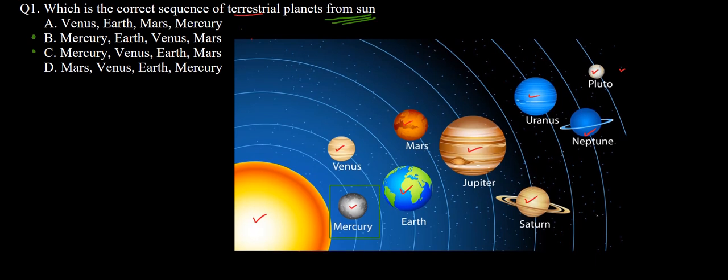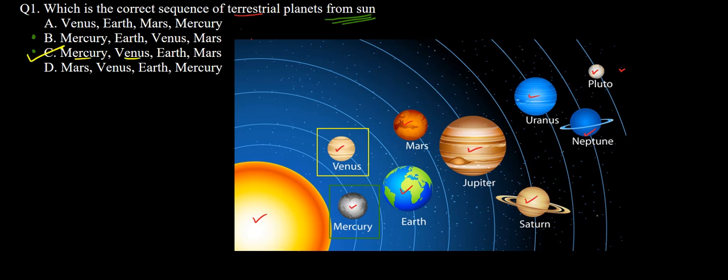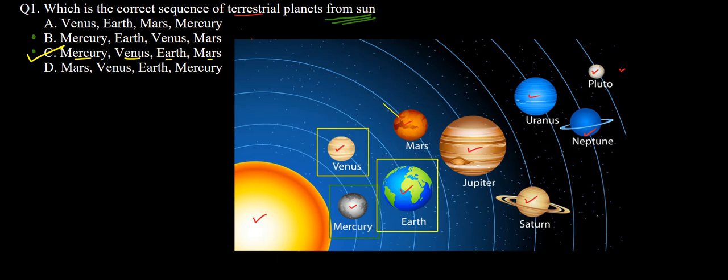So you can see Mercury is the first one, then Venus is second. In option C we have Mercury first, then Venus, and third and fourth are Earth and Mars. You can check here the third one is Earth and the fourth planet is Mars. So option C gives the correct sequence of planets, hence option C is the correct answer to this question.